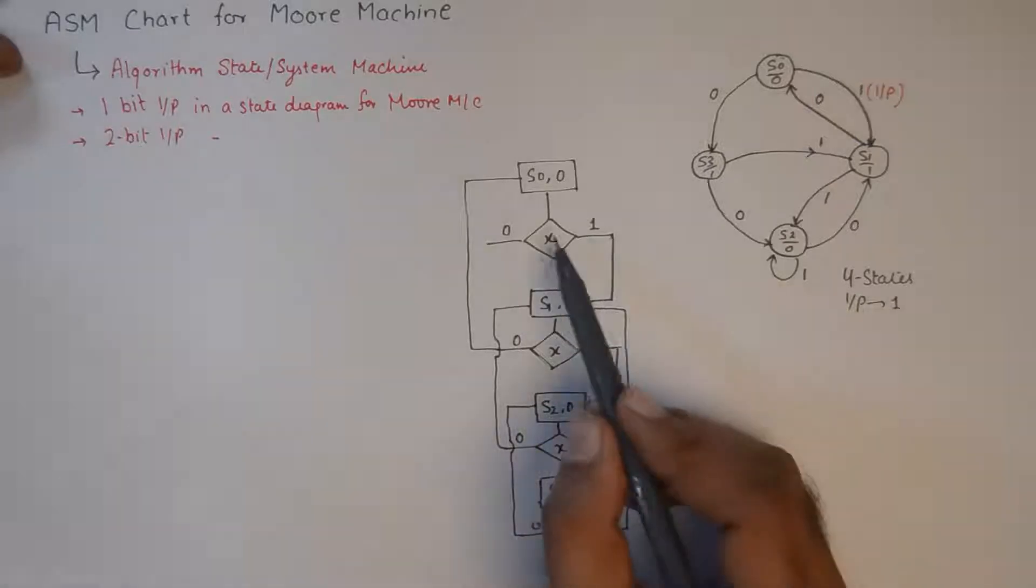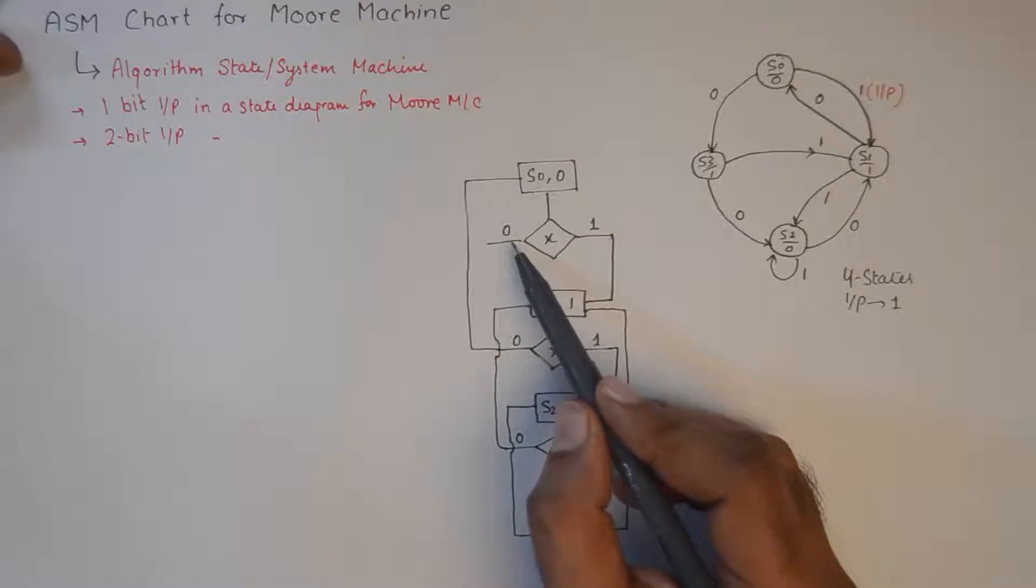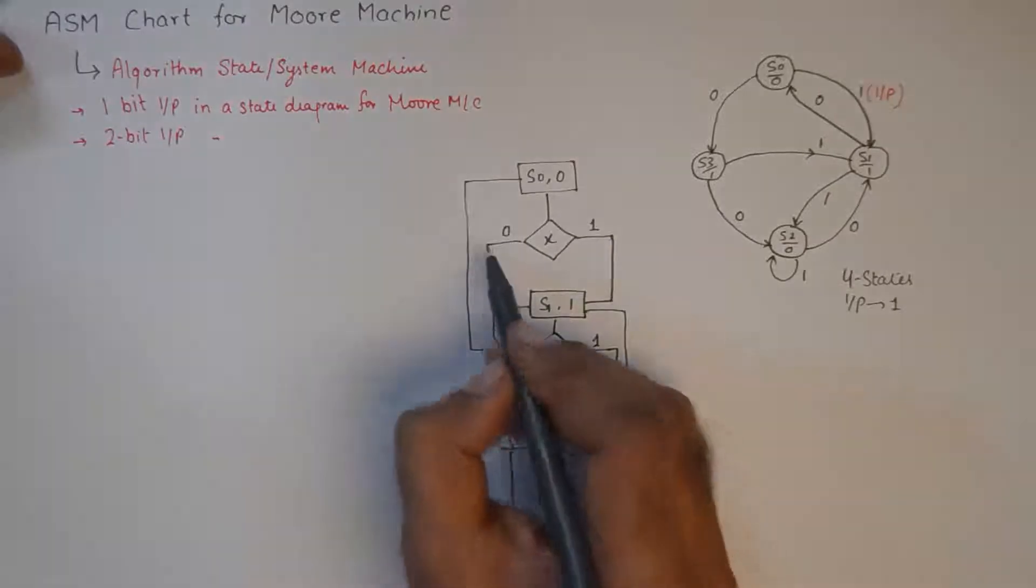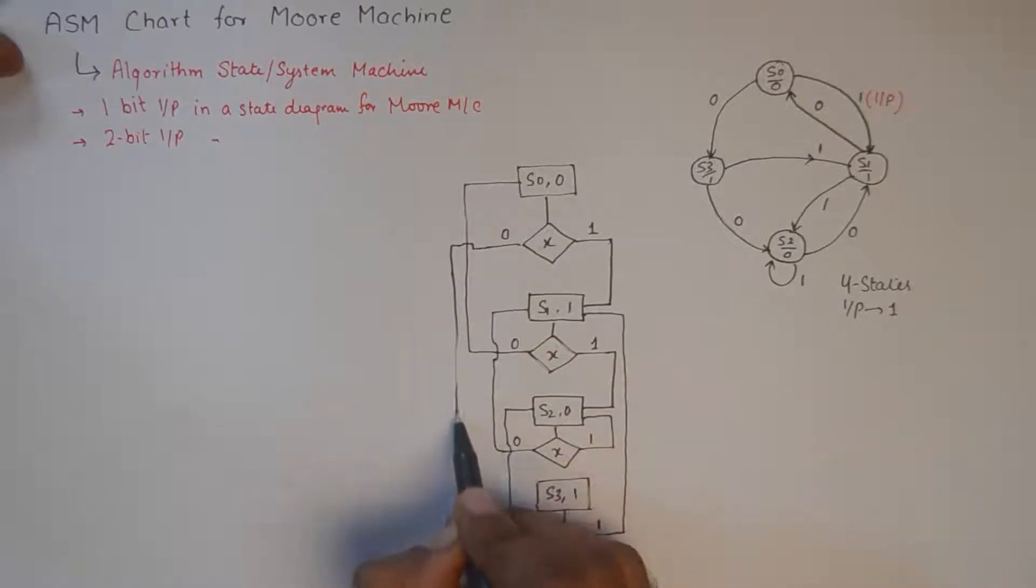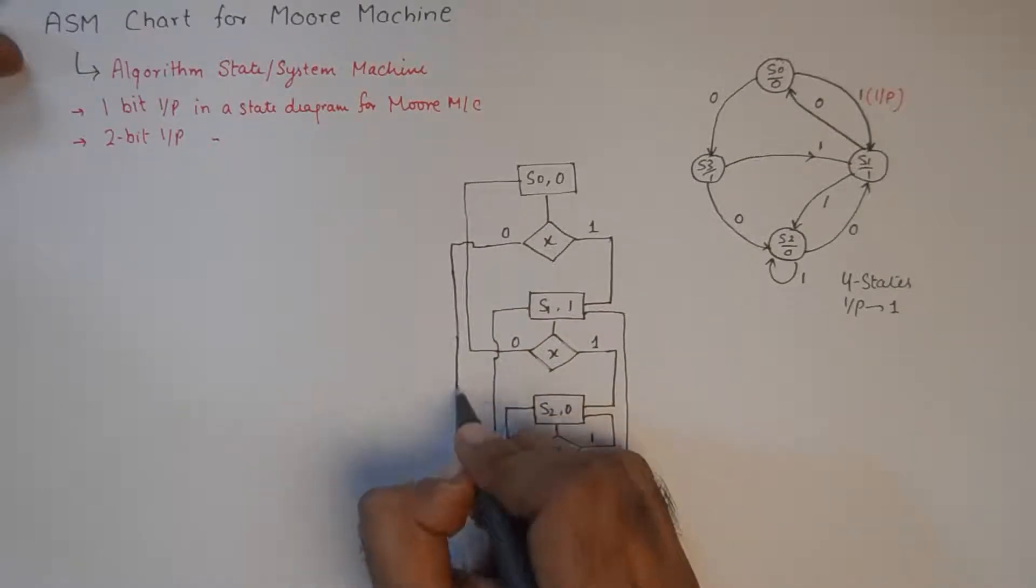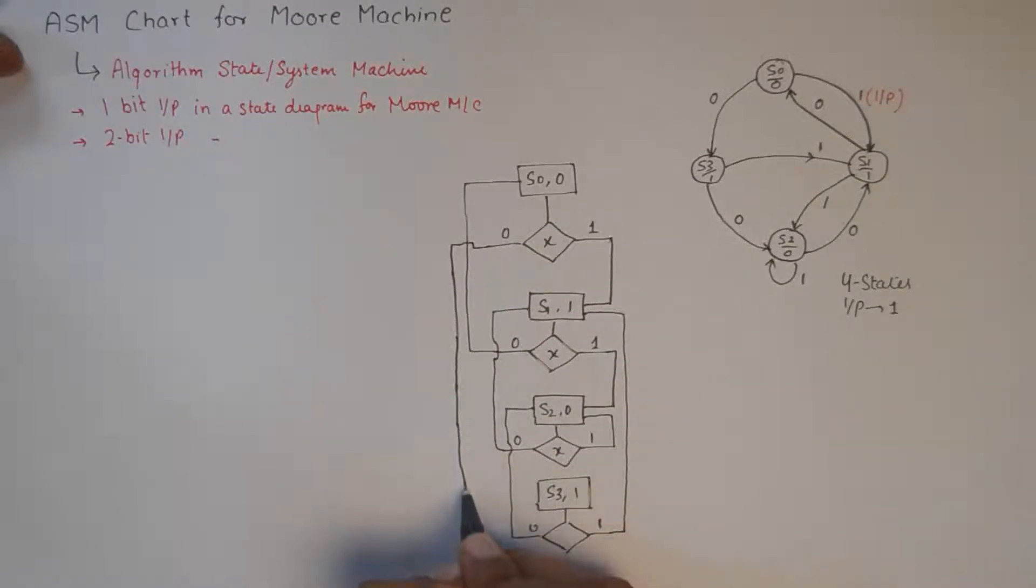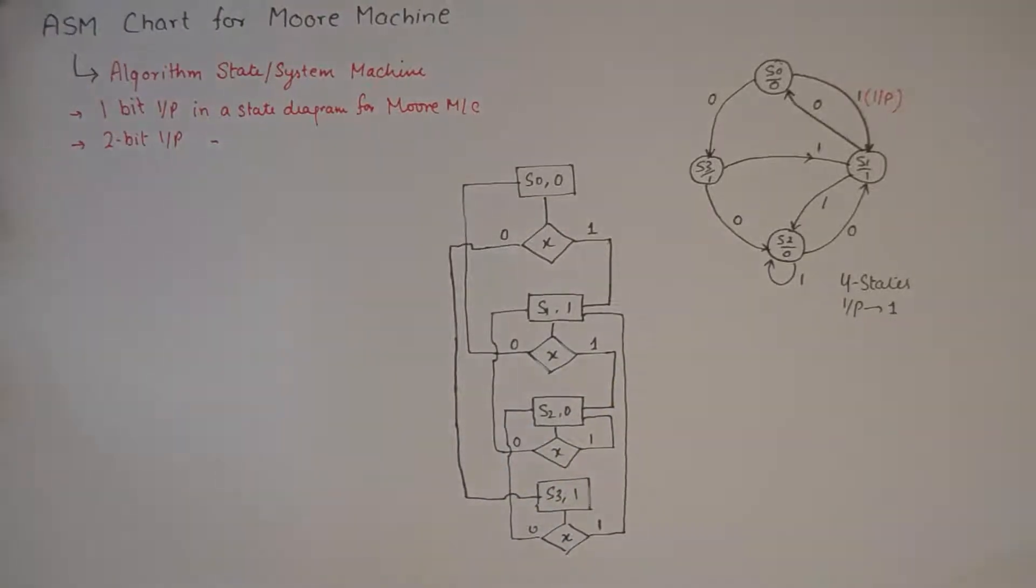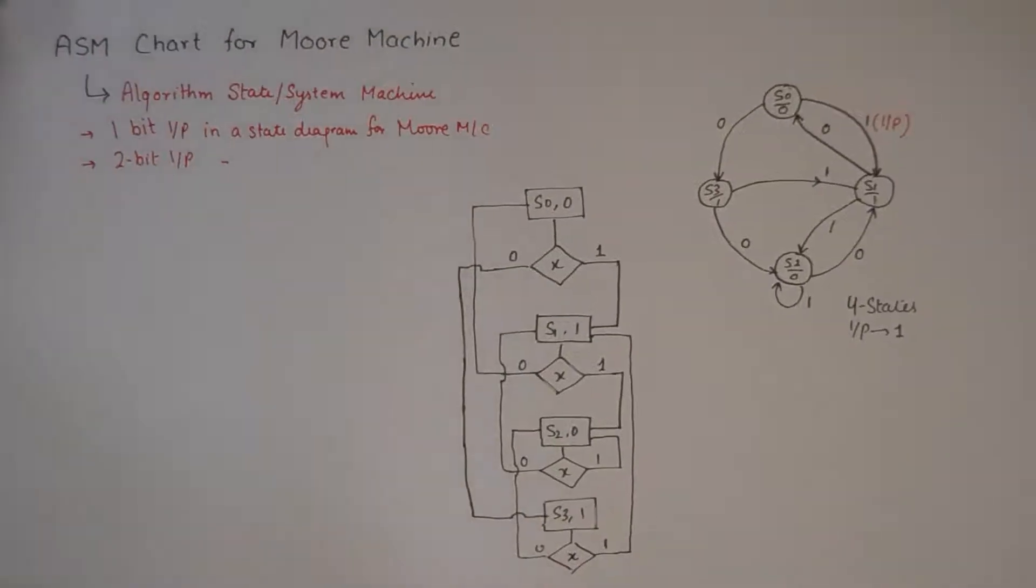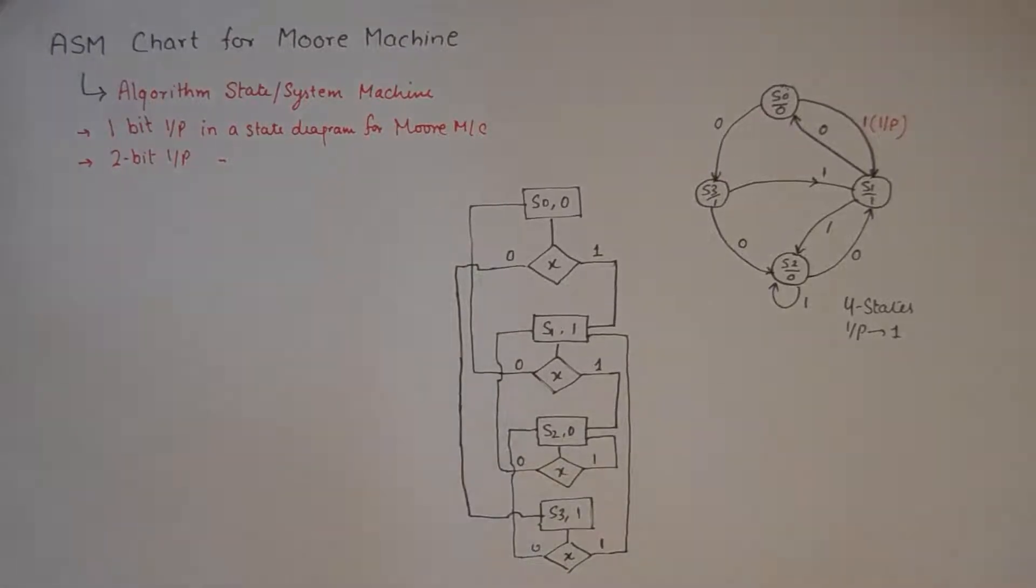Now a 0 at S0 takes me to S3, so that was the only part which was not drawn. So I'm going to finish this chart by drawing that path also. So this completes our ASM chart for this Moore machine, which is of course a machine with one bit of input.